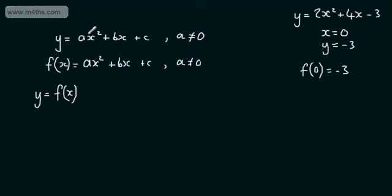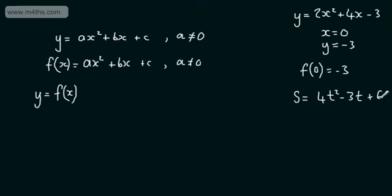That won't always be in terms of y and x. In mechanics, for example, displacement is given as s, and displacement is a function of time. So we might have s = 4t² - 3t + 6. This is again a quadratic equation, just now in terms of t. It's a quadratic because t squared is the highest power. We call this a polynomial.